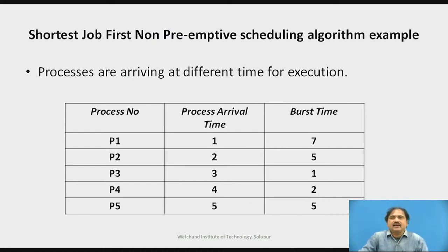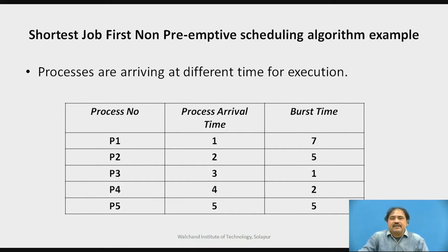This entire process depends on the burst time. Let's understand some features of this algorithm through a table showing processes stacked in the ready queue. The second column shows process arrival times and the last column shows burst time. The table shows processes P1, P2, P3, P4, and P5, arriving at time instances 1, 2, 3, 4, and 5 respectively. The burst times are also noted in the last column.